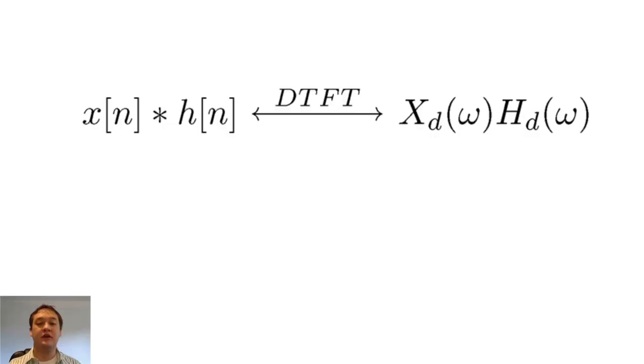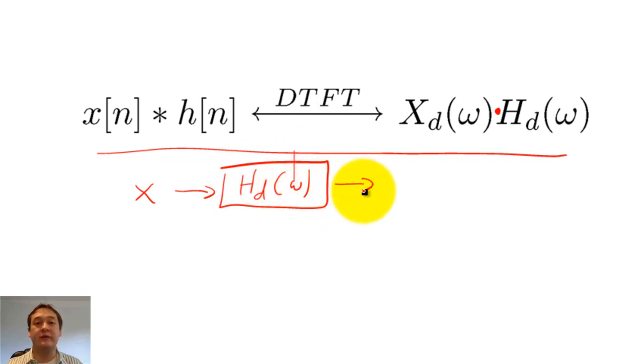The final two properties are useful because they allow us to simplify our calculations. The convolution property tells us that we can choose to multiply the DTFTs of x and h rather than convolving the discrete time signals of x and h. We use h here because h corresponds to the filter that we use to create y. We'll discuss h in greater depth later.